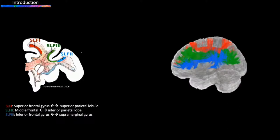Here we focus on the SLF system, a major frontoparietal cortico-cortico association pathway with three subcomponents: SLF1, 2, and 3.